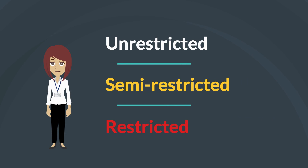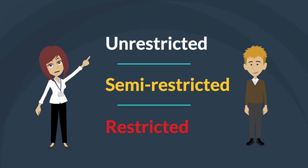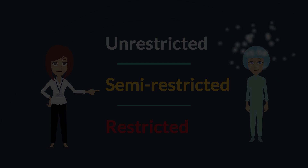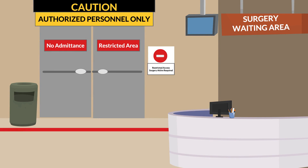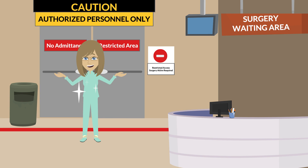Perioperative settings have three different traffic areas: unrestricted, semi-restricted, and restricted. In unrestricted areas, staff can wear their usual work clothes or street clothes. In semi-restricted areas, staff are required to wear special clothing or surgical attire. The entrance to this area should be marked, such as with a red line on the floor. All personnel entering semi-restricted areas should follow AORN guidelines for surgical attire, which include wearing clean scrub attire laundered at a healthcare-accredited laundry facility.